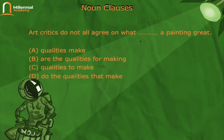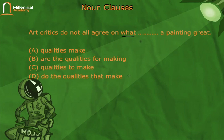TOEFL example 2: 'Art critics do not all agree on what [blank] a painting great.' There is a connector 'what,' so after it we might need a subject, or possibly we go directly to a verb. Option D — 'what do the qualities that make' — is definitely wrong, because that forms a question, and remember, a noun clause should not form a question.